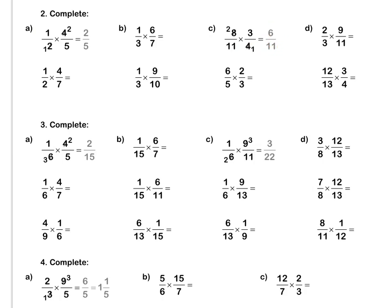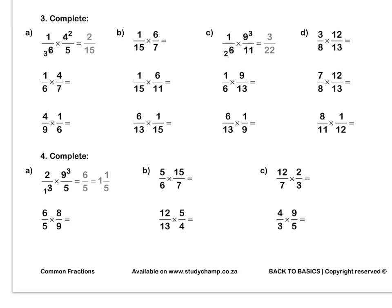Question 3: in this sum, we have simplified our 4 and our 6 by dividing both by 2. 4 divided by 2 is 2, and 6 divided by 2 is 3. We multiply out to get two fifteenths.